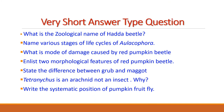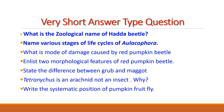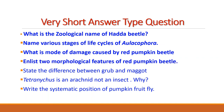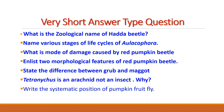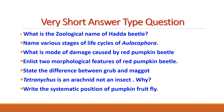Very short answer type questions: What is the zoological name of Hadda beetle? Name various stages of life cycle of Aulacophora. What is the mode of damage caused by red pumpkin beetle? Enlist two morphological features of red pumpkin beetle. State the difference between grub and maggot. Tetranychus is an arachnid, not an insect — why? Write the systematic position of pumpkin fruit fly.